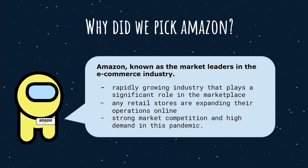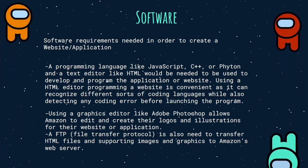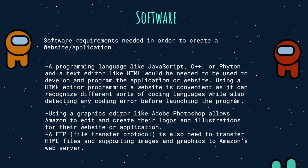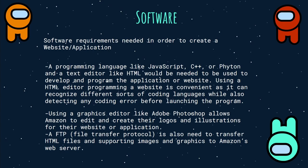With high demand in the current state of the world, some software required to create a website or application would be a programming language like JavaScript, Python, or C++, and a text editor like HTML. Using the HTML editor makes programming more convenient since it can recognize different coding languages and easily detect programming errors before launching. A text editor like Adobe Photoshop should also be used to edit and create logos and illustrations. A file transfer protocol would also be needed to transfer files, supporting images and graphics to Amazon's web server.